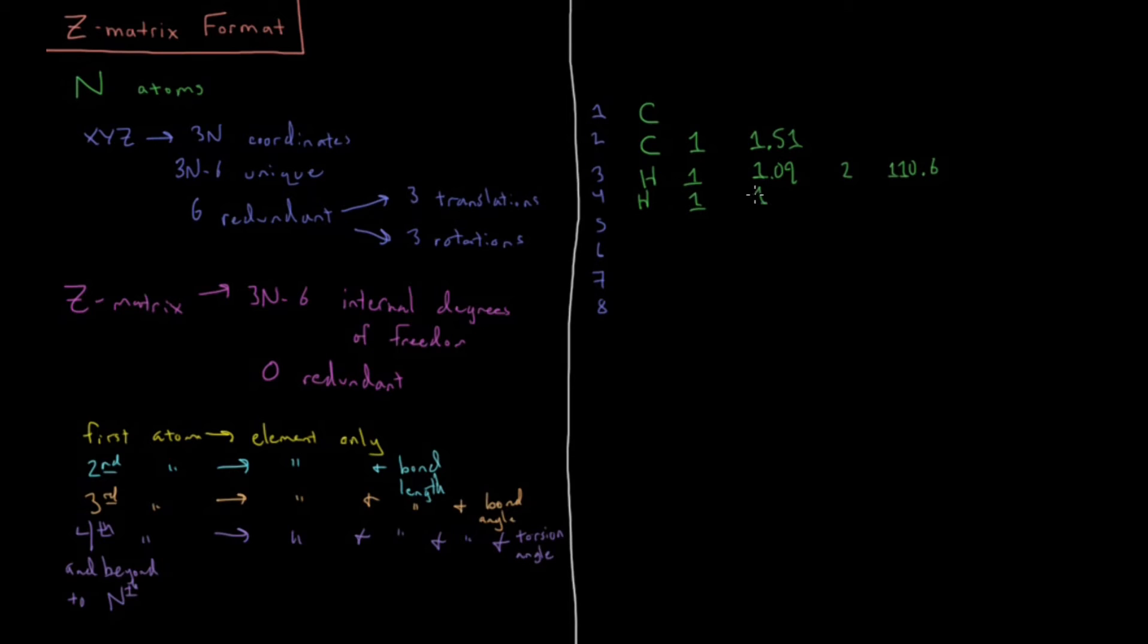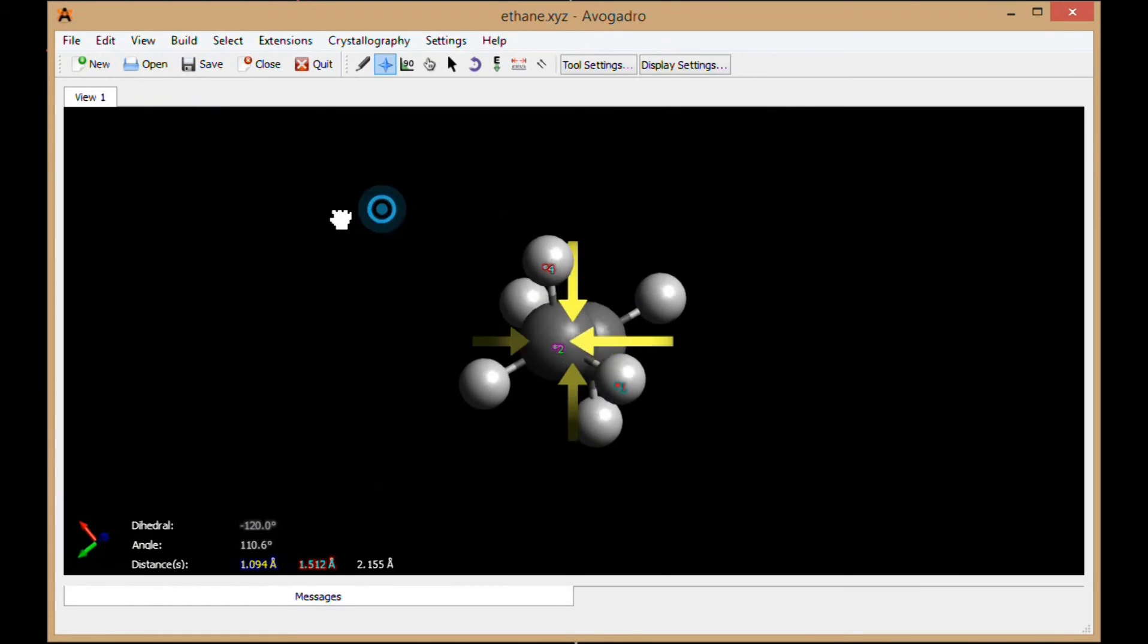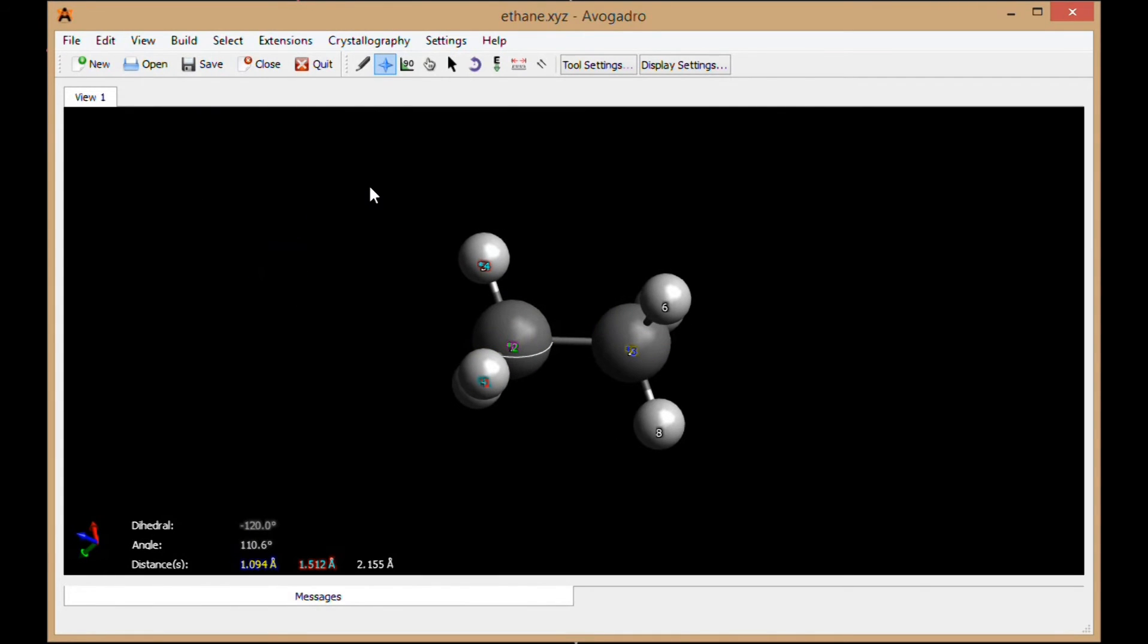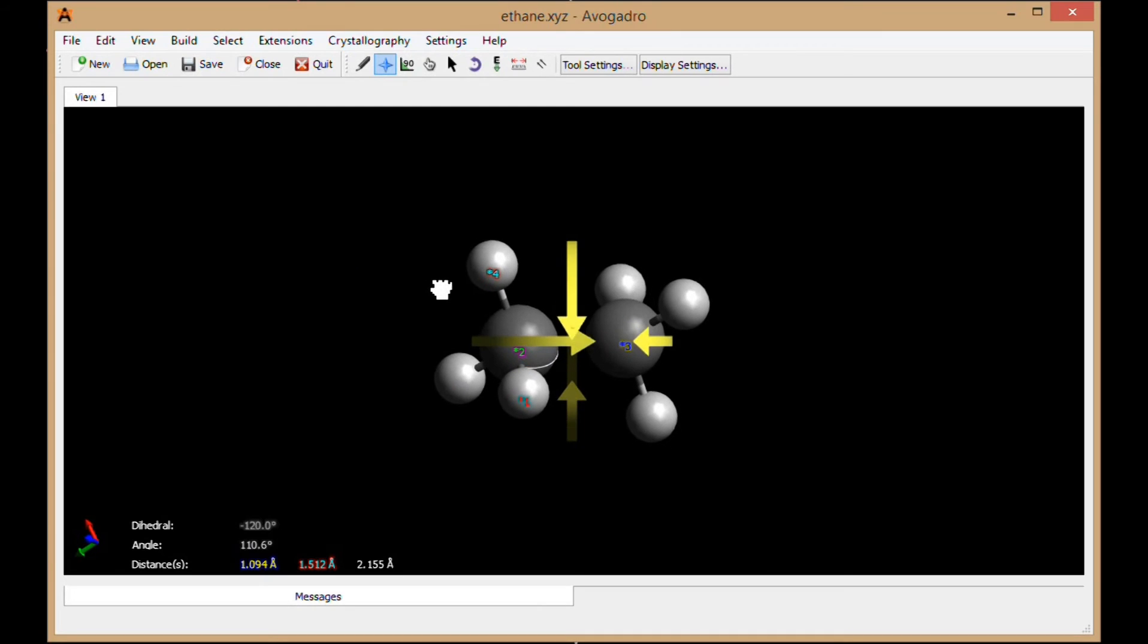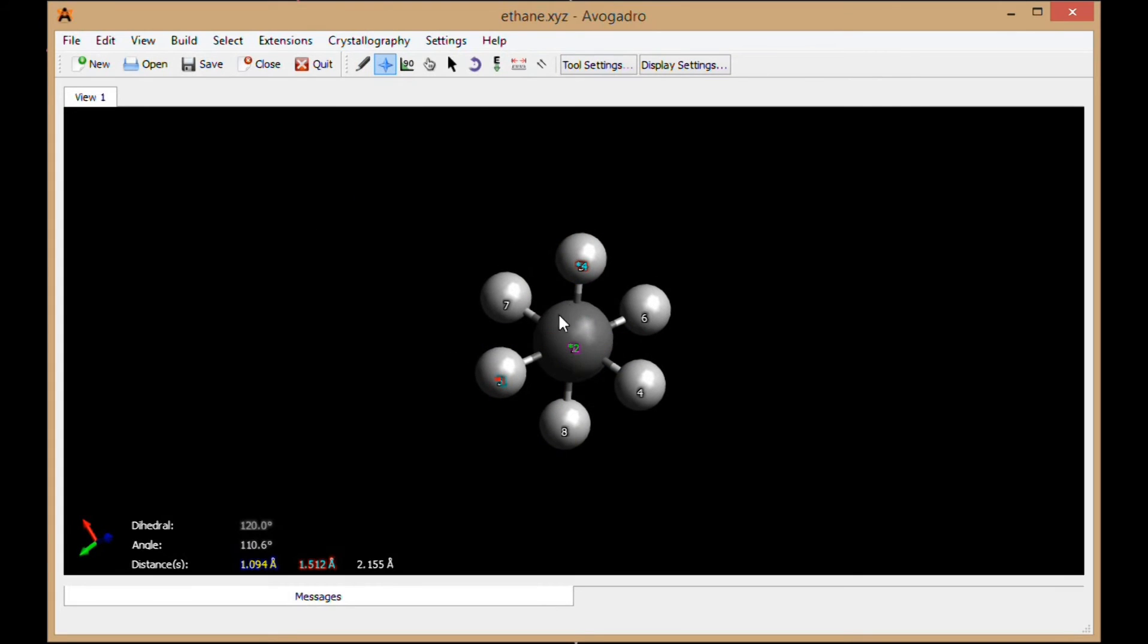So I have to say H, 1, 1.09, 2, 110.6, and then torsion angle to atom three, which is minus 120.0 degrees. Atom five is going to be the same thing, except if I also make it to atom four, you'll notice that the torsion angle is now going to end up being positive instead of negative. Now it's positive 120 instead of negative 120. It's on the other side, looking down this bond, minus 120 on this side, positive 120 on this side.